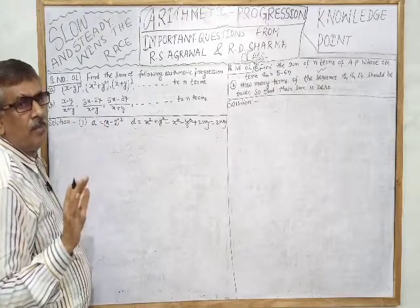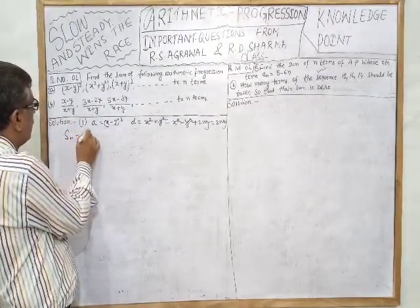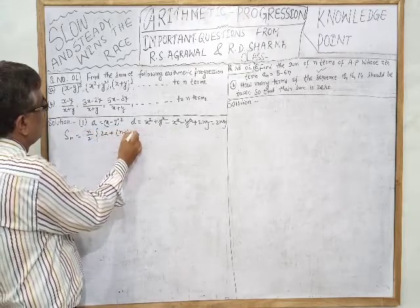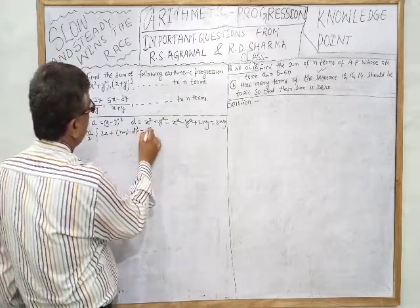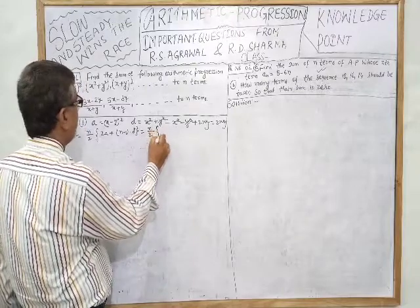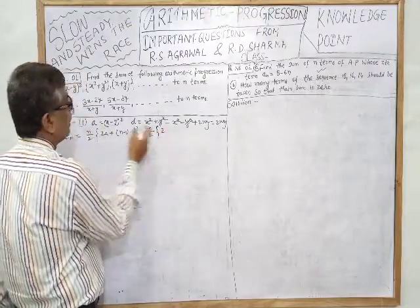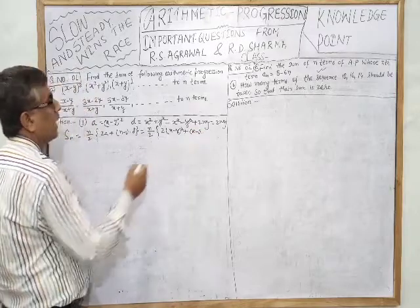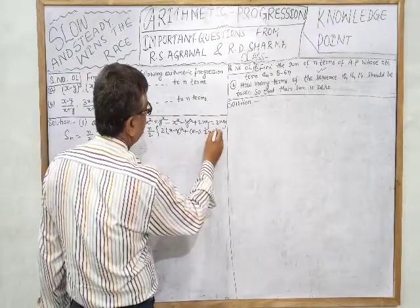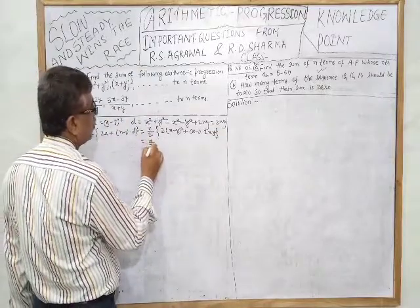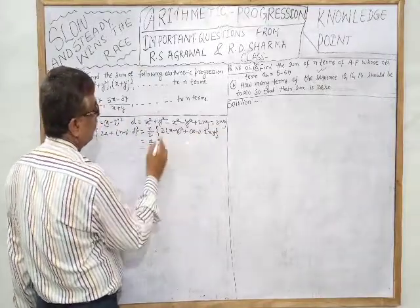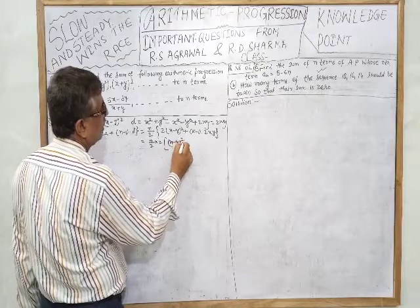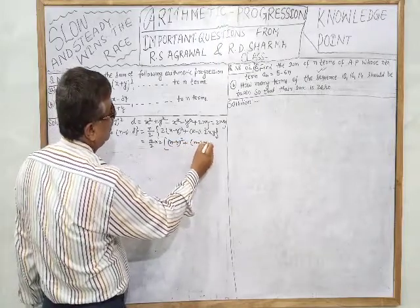Using the sum formula Sn = n/2 × [2a + (n-1)d], where a = (x-y)² and d = 2xy, we get: n/2 × [2(x-y)² + (n-1)×2xy]. Taking 2 common, the result simplifies to n × [(x-y)² + (n-1)xy]. So the answer is n[(x-y)² + (n-1)xy].